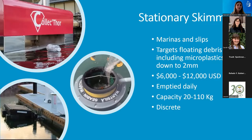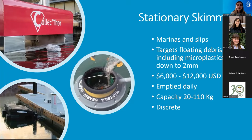First up are stationary skimmers. We use an example of these called Seabins along the Toronto Harbourfront to collect debris. These are essentially floating trash cans that sit on the surface of the water and are often mounted to a dock. They collect floating trash on the water surface, including microplastics — we collect a lot of microplastics in these devices. They range in cost from six to twelve thousand USD, and they're often the size of a trash can and need to be emptied daily or at the very least weekly, depending on the environment and the amount of trash collected. The cost ranges depending on the size.